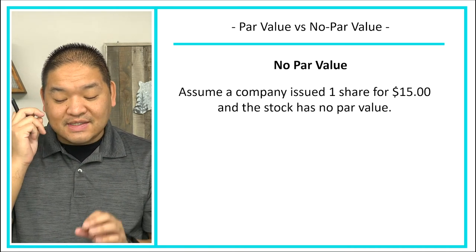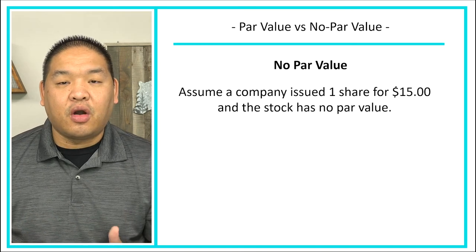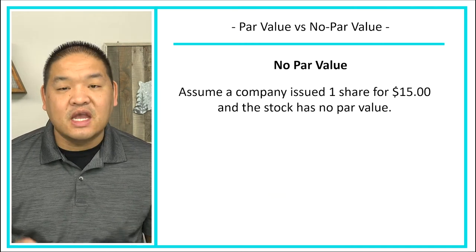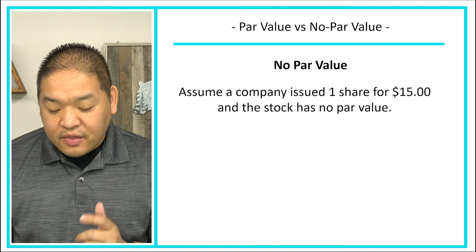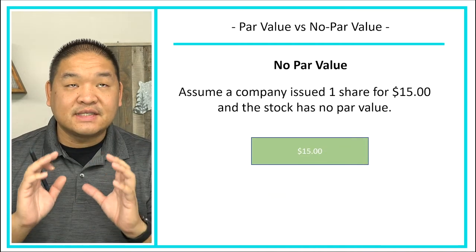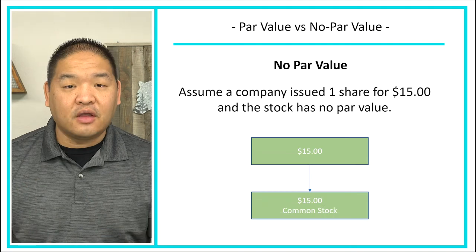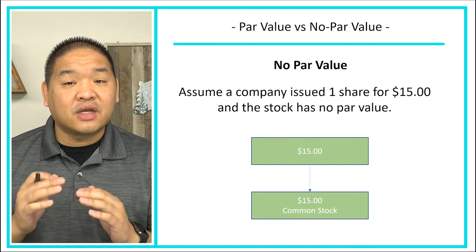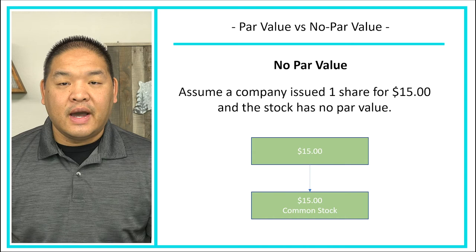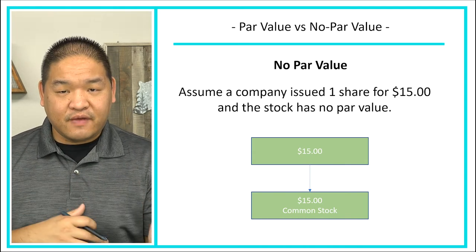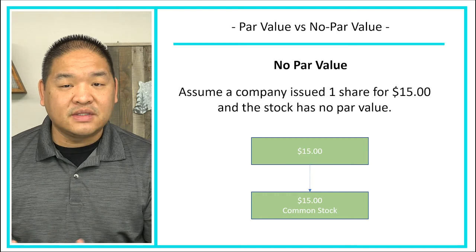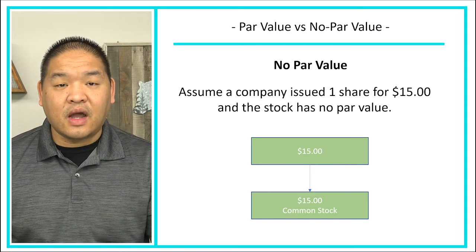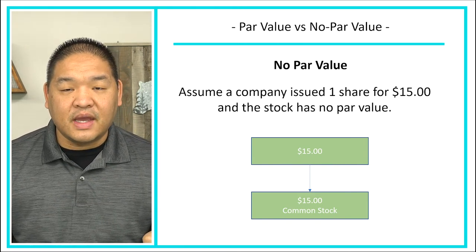What happens when a company issues shares but there is no par value? In that case, assume a company issues one share for $15 with no par value. We've got $15 from selling that share, and we're going to put all $15 into the common stock account. We don't use additional paid-in capital — we just use common stock. So with no par value, common stock captures everything.